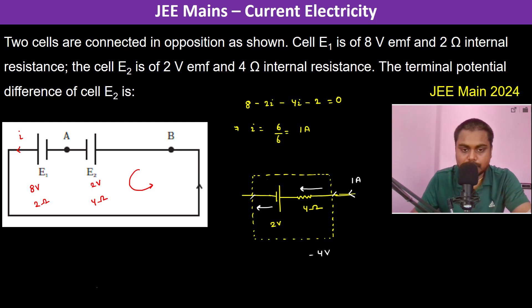And here also the potential decreases by minus 2 volts. So therefore it's minus 6 volts. Therefore the terminal potential difference of the cell E2 is 6 volts. The answer is 6. Thank you.